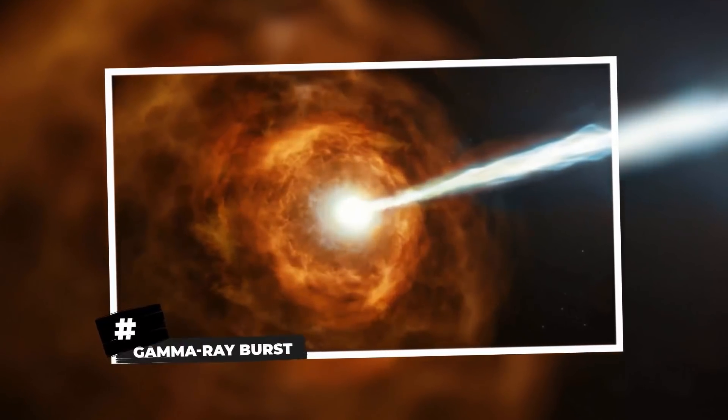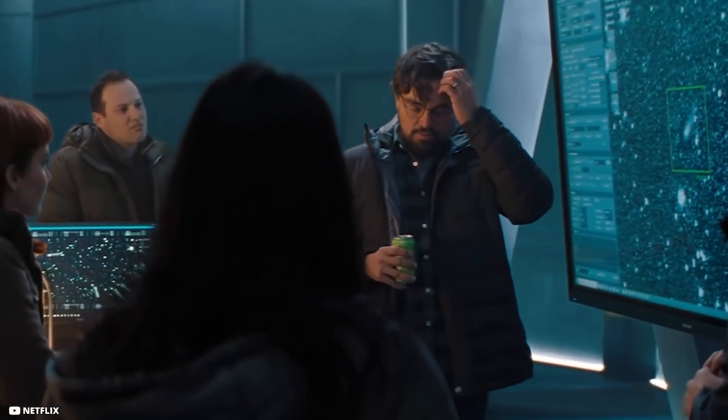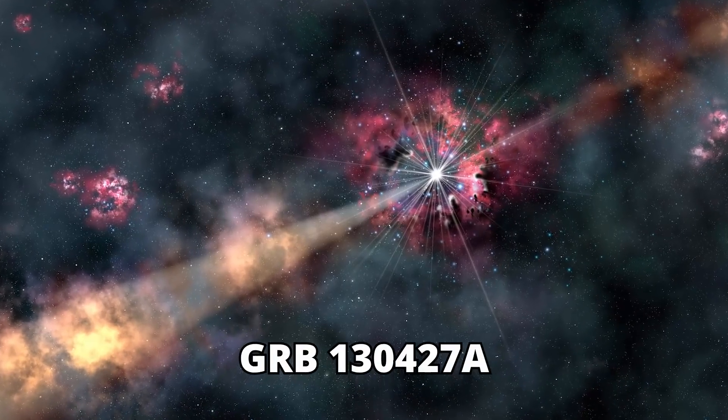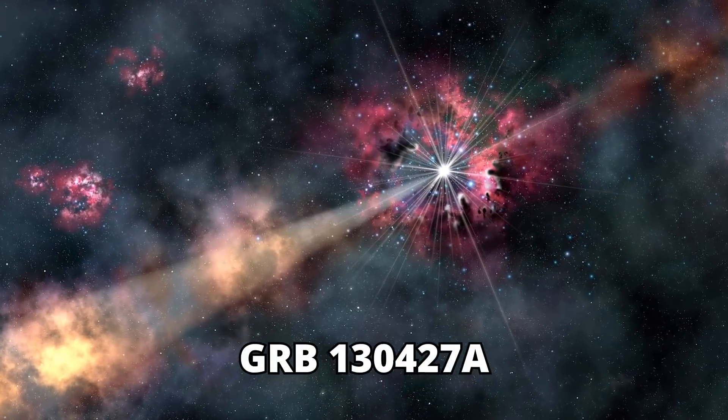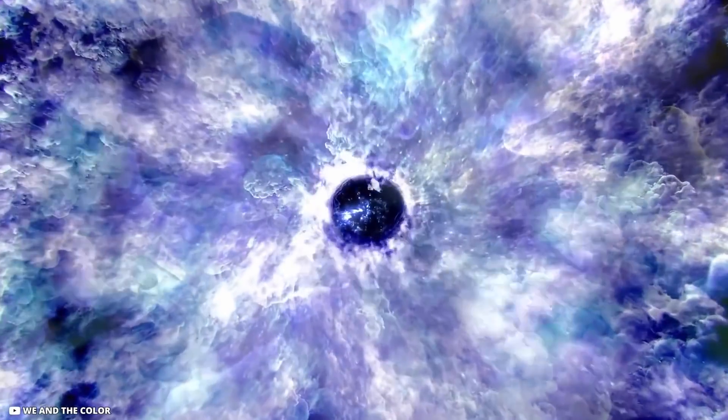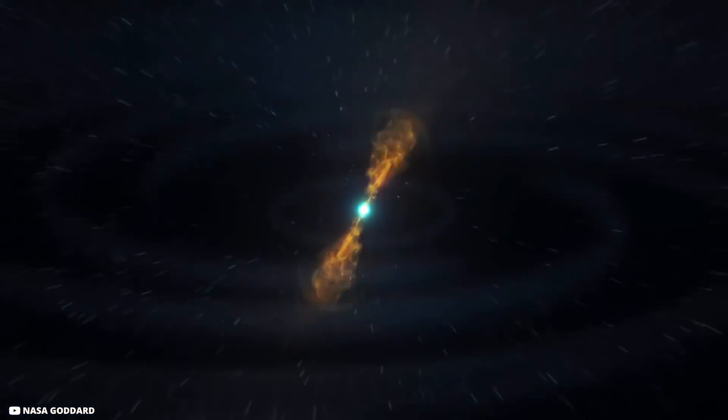Gamma-ray Burst. Astronomers detected the most powerful and brightest cosmic explosion ever recorded in April of 2013 with an energy of 94 billion electron volts. GRB 130427A was a gamma-ray burst that created a jet of matter that came near to traveling at the speed of light. Gamma-ray bursts are the brightest explosions in the cosmos. GRBs occur when massive stars run out of nuclear fuel and collapse under their own weight, according to NASA researchers.